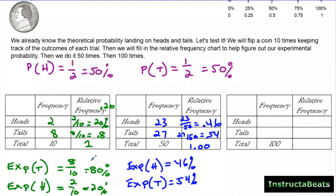When we only did 10 flips, we were way off. Now we've done 50, and we're not quite to 50% — not exactly what we thought was going to happen — but we are getting closer. Let's keep going and do another 50 to make our total 100.